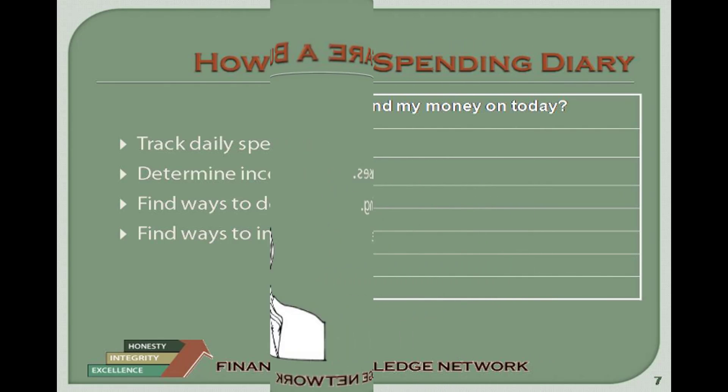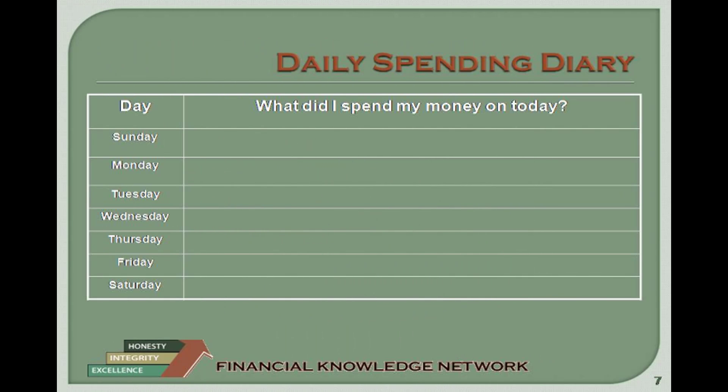Daily Spending Diary: What did I spend my money on today? Remember to plan for income and expenses that do not occur on a monthly basis. Tips to help you decrease spending or save more money: Carry only small amounts of cash in your wallet so you will not spend it. Use direct deposit for your paycheck or federal benefits such as Social Security. Control your use of credit cards. Do not go shopping just for fun. Take your written savings goals with you as a reminder. Buy only what you need. Do not buy things just because they are on sale.